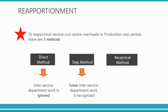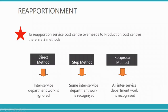The third method is called the reciprocal method, where all inter-service department work is recognized — both service departments provide service to each other and to production. For example, warehouse people eat in the cafeteria and cafeteria keeps its goods in the warehouse. In the direct method service departments do not charge each other at all; in the step method one charges the other but not back; in the reciprocal method both charge each other.